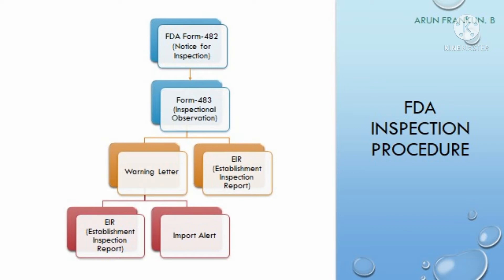Now let me tell you about the FDA inspection process for pharmaceutical companies. Whenever the FDA wants to inspect the pharmaceutical facilities, upon arriving at the facility they will issue Form 482 to the pharmaceutical company. Form 482 is called the Notice of Inspection, and with that notice they will start inspecting the facilities.